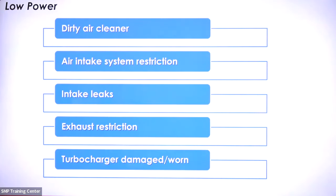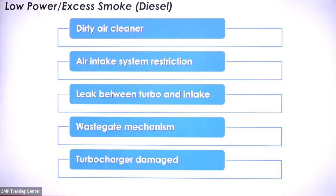When a customer comes in with a turbocharged vehicle and their complaint is low power, there are some easy things we can look for: a dirty air cleaner, an air intake system restriction, an intake leak, an exhaust restriction, or it could just be that the turbocharger is damaged or worn. The same holds true if it's a diesel with a low power complaint and also excess smoke — check for dirty air cleaner, air intake system restriction, a leak between the turbo and intake, a wastegate mechanism issue, or possibly a damaged turbocharger.